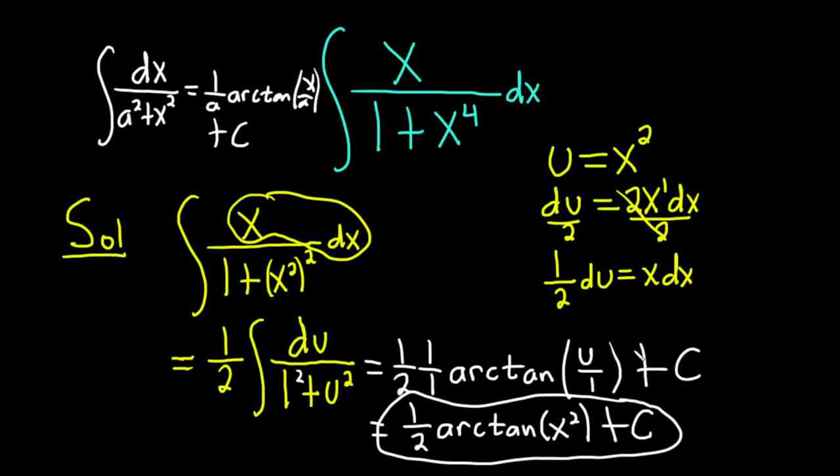Capital C. So interesting problem because we had to rewrite it first before making this substitution of u equals x squared. And I knew to do that because when I saw 1 plus x to the 4th, I thought the arctan formula has a squared plus x squared. Here we have x to the 4th, so let's rewrite that as something squared. And so that was the first step. And then we proceeded from there.